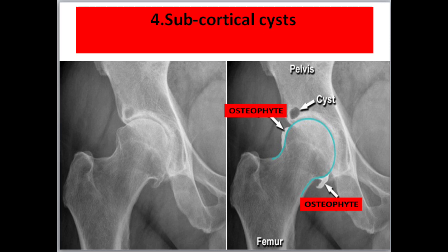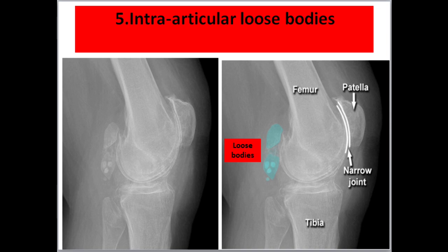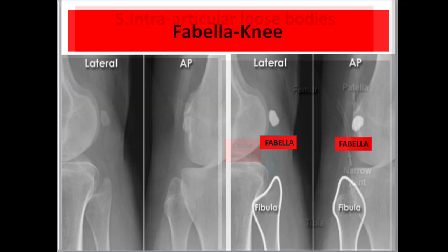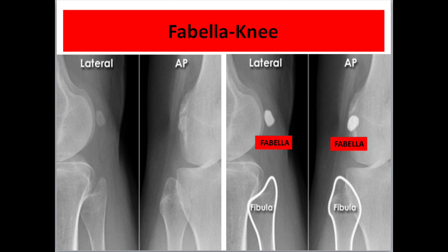Five: intraarticular loose bodies. In some patients, calcified loose bodies may be seen within an osteoarthritic joint. These are fragments of bone or cartilage which have detached from the joint surfaces and remain in the joint capsule. This lateral view of the knee also shows severe osteoarthritis of the patellofemoral joint, which is very narrow. Note: do not mistake the fibula for a loose body — this is an example of a normal fibula.